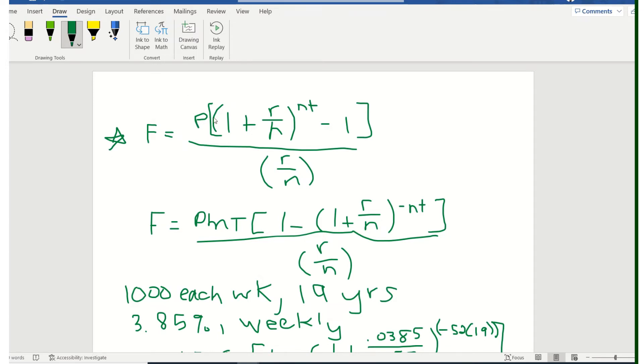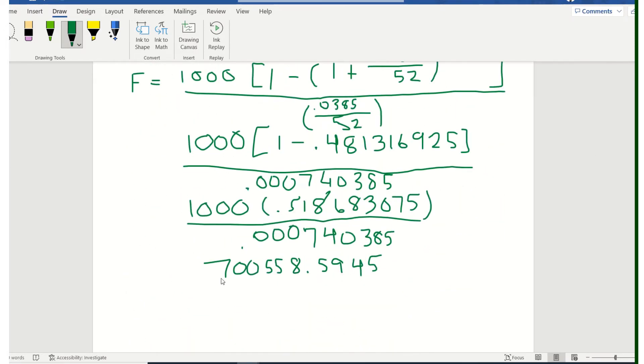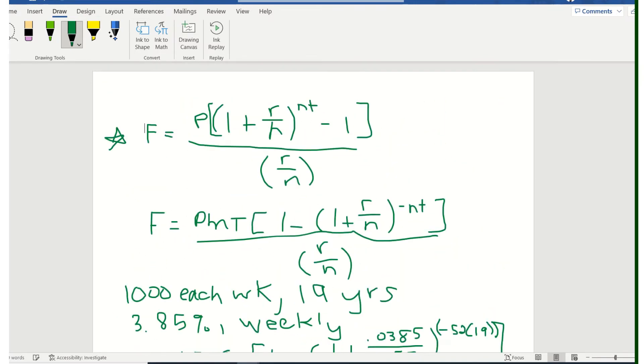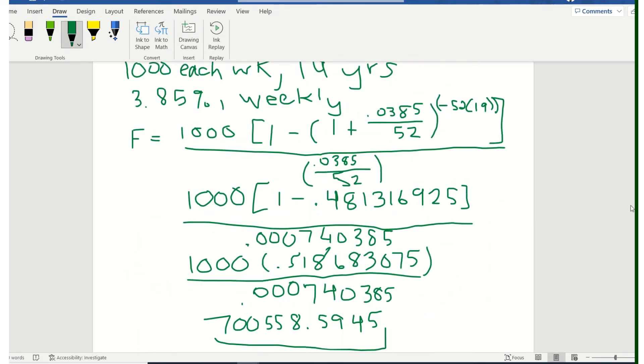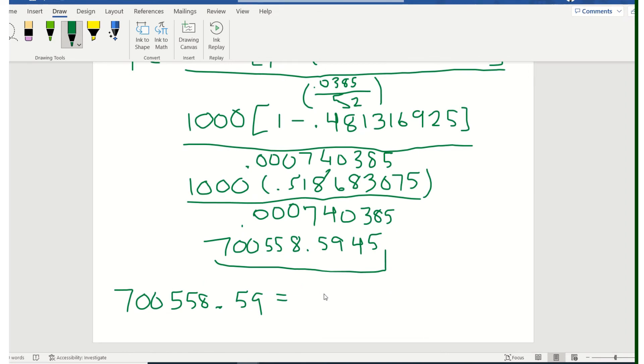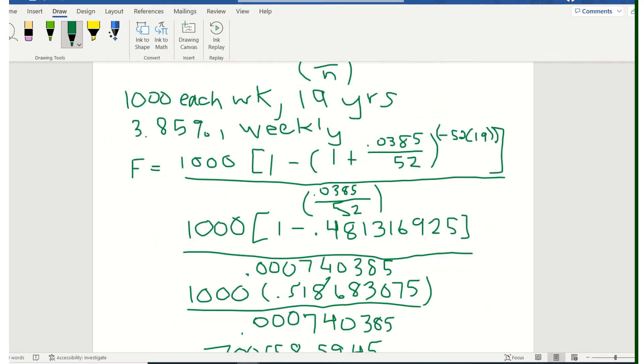And what we don't know is the P here. We don't know how much she's going to put in every single week in order to get this amount. But we do know what the F is this time because it is going to be what she's saving up for.